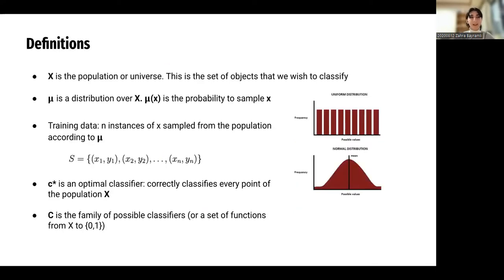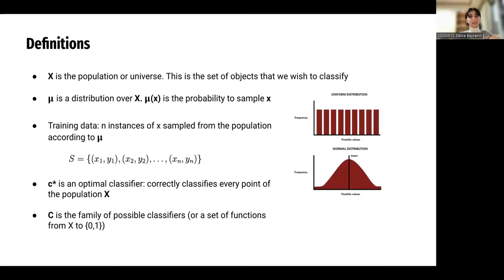Before starting, I'd like to introduce a couple of definitions. They're not new, but I'll be using them throughout the presentation. First, we have X, which is the population or universe — the set of all points that we wish to classify. Next, we have μ (mu), which is a distribution function over X. For example, when we say we want to choose x from population X with distribution μ, it means the probability that x will appear is μ(x). μ can be any probability function, such as a uniform distribution or a normal distribution.